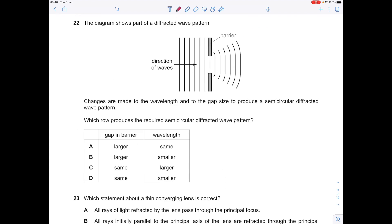The diagram shows part of a diffracted wave pattern. Changes are made to the wavelength and to the gap size to produce a semicircular diffracted wave pattern. Which row produces the required semicircular diffracted wave pattern? In order to get this level of diffraction, we need the wavelength to be longer than the gap in the barrier.